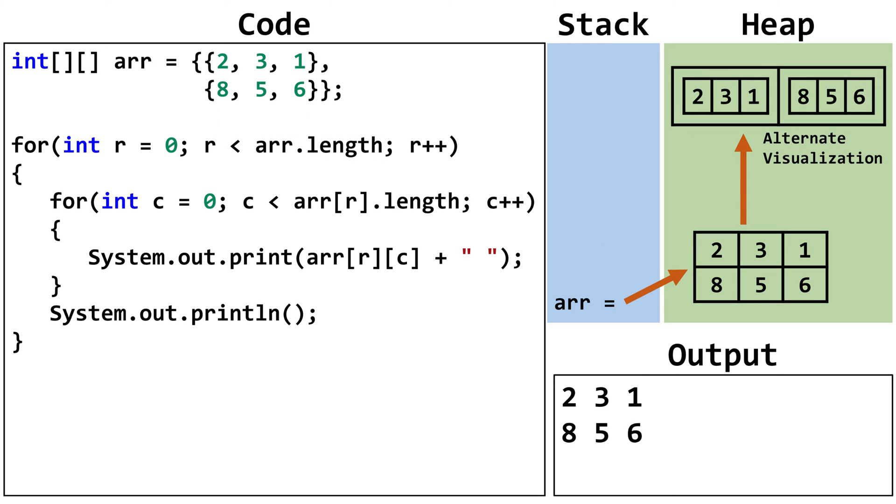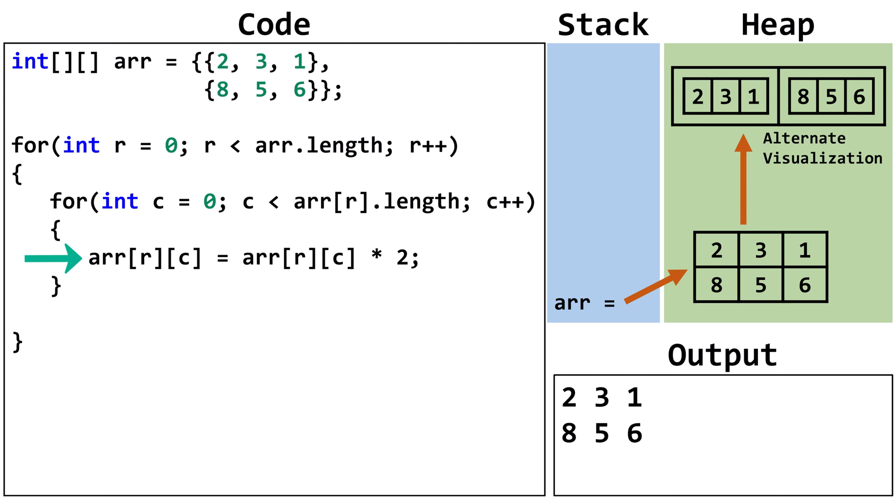When using for loops, we also have the option to modify the values in the loop. This modification causes the code to double the value of each element in the array. We can also modify the increment. In this case, r advances by 2 instead of 1.